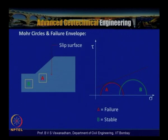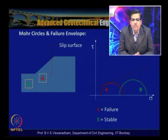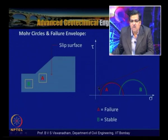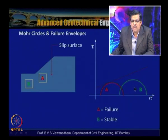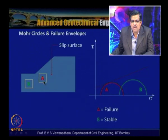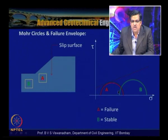Consider two Mohr circles: circle A and circle B, with the Mohr-Coulomb failure envelope as a straight line. Circle B is stable even though it has larger stresses, while circle A is at failure — this could represent an element at the toe of a slope (circle A, at failure) vs. one further away (circle B, still stable).